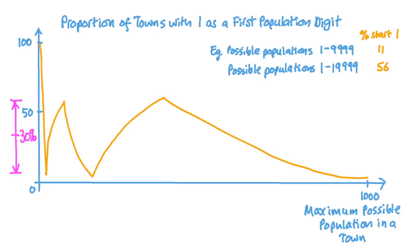So, if the data we're looking at is uniformly randomly distributed over the range 1 to 9,999, then we'd expect about 11% of the numbers to begin with a one. But if the data is uniformly randomly distributed over the range 1 to 19,999, then you'd expect about 56% of numbers to begin with one.